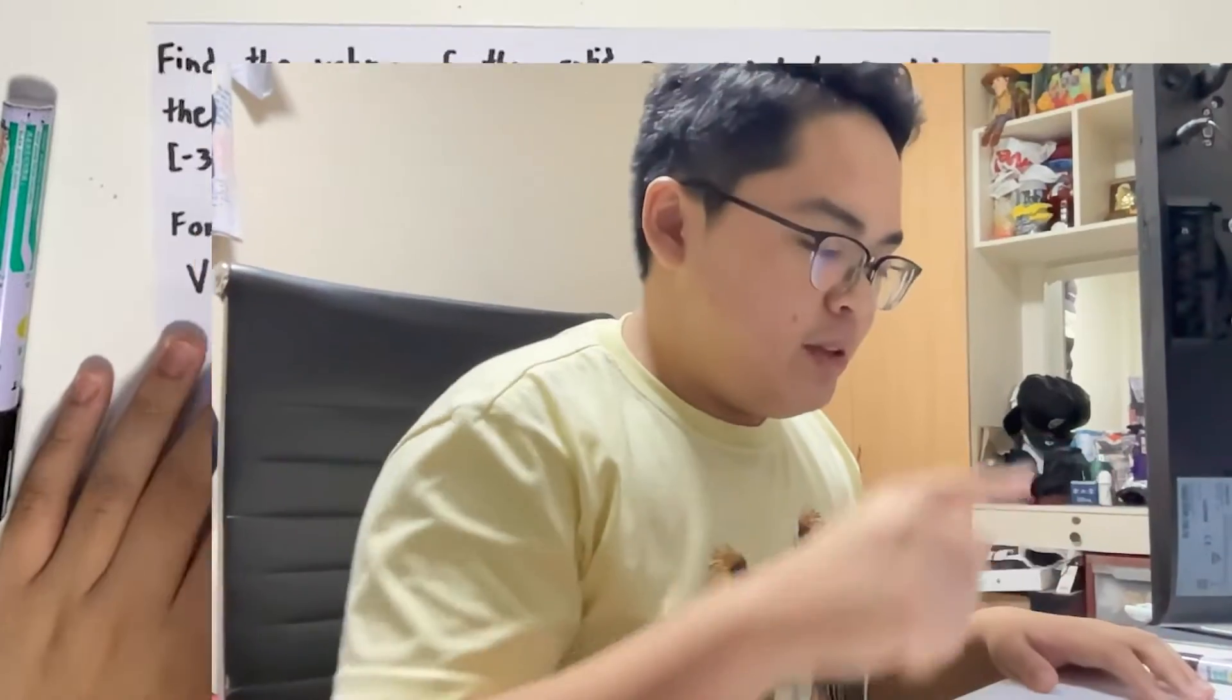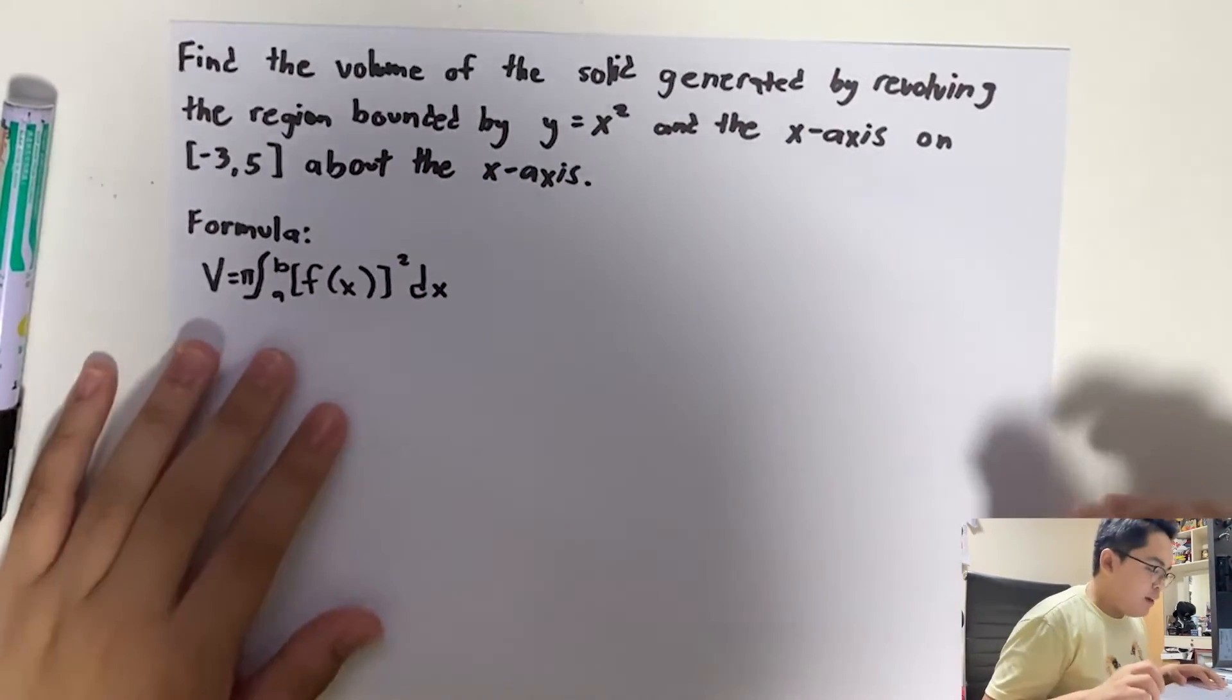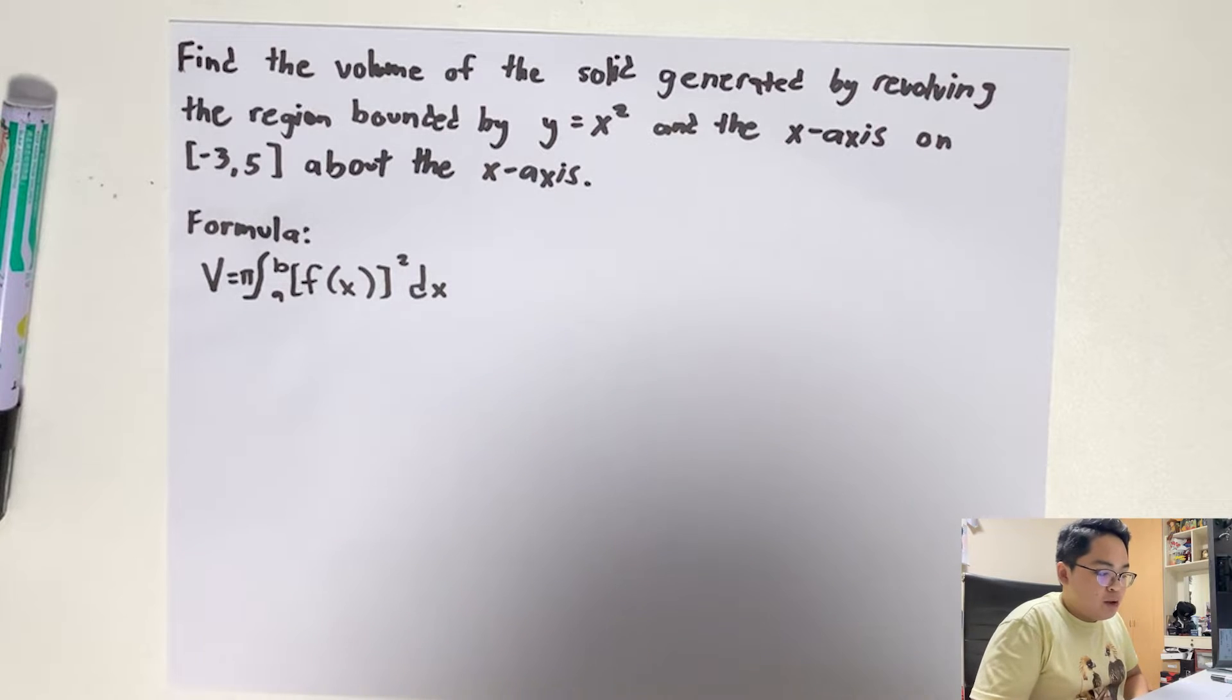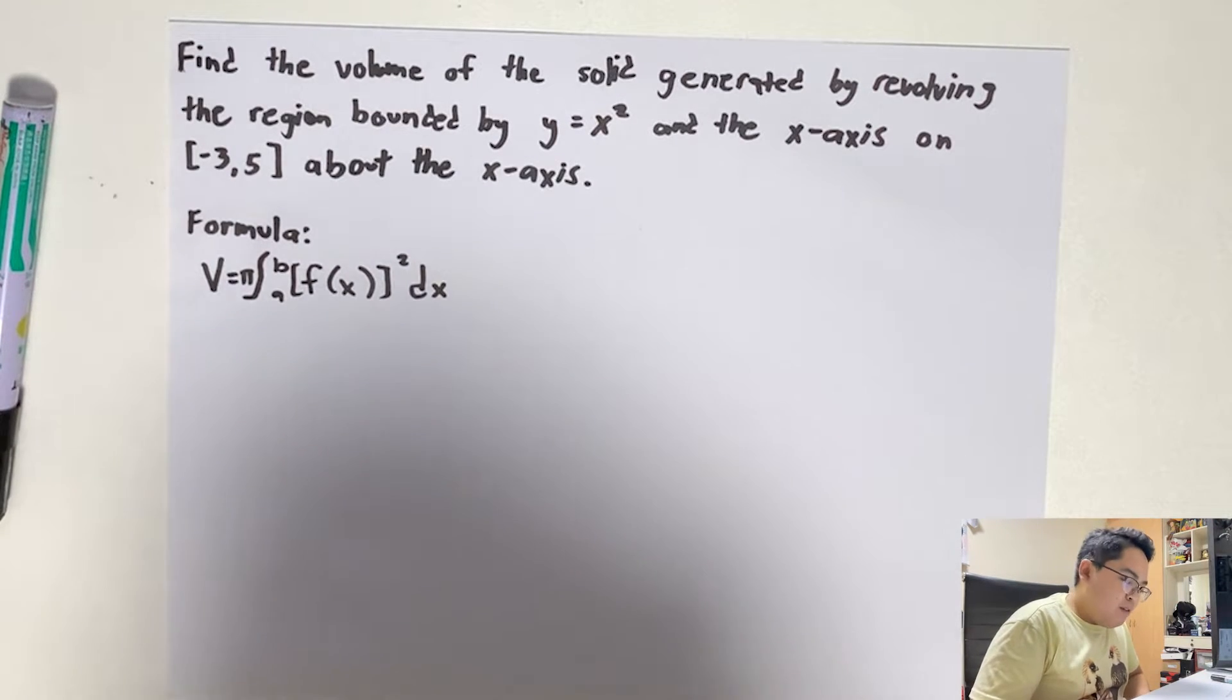Today my problem, as you can see, is to find the volume of the solid generated by revolving the region bounded by y = x² and the x-axis on [-3, 5] about the x-axis.